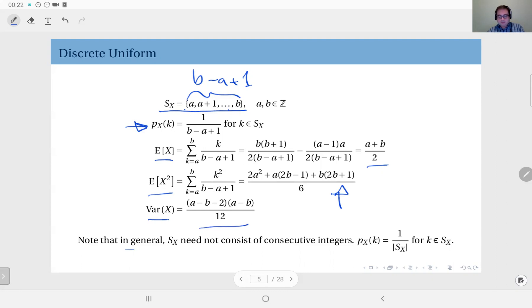In general, so here we considered to compute these statistics, we constrained ourselves to this set from integers from A up to B. But in general, that doesn't have to be so. The sample space need not consist of consecutive integers.